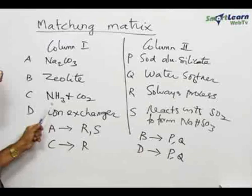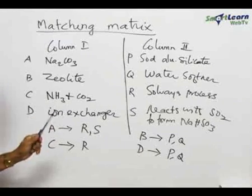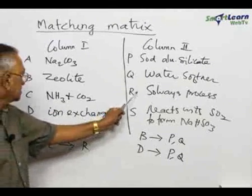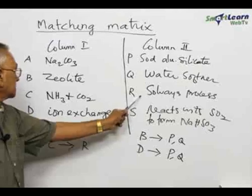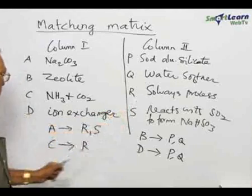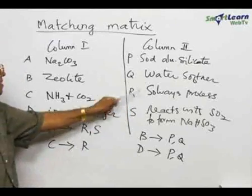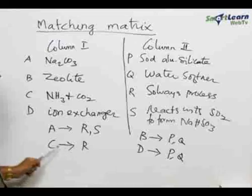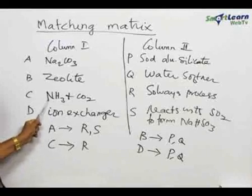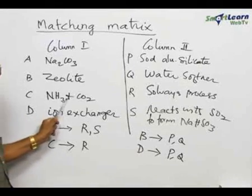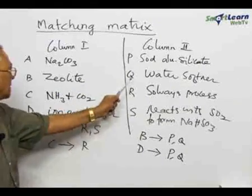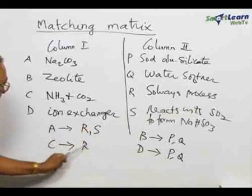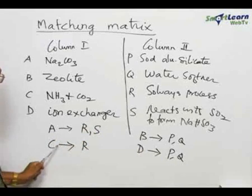Coming to C — ammonia and carbon dioxide. This is an important part of the Solvay process, which is present in R. So C matches with R. As far as ammonia and carbon dioxide are concerned, they do not match with aluminum carbonate, water softener, or S. The only one that matches with C is R.